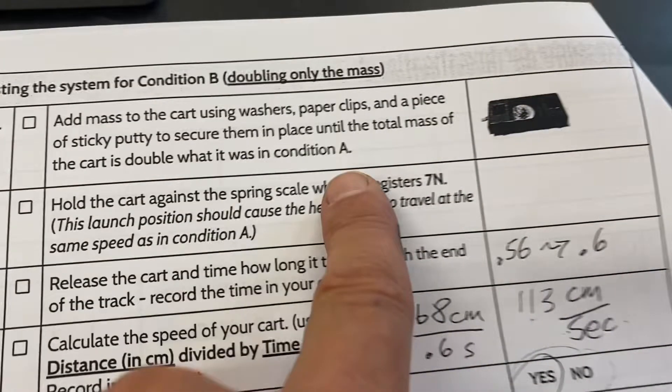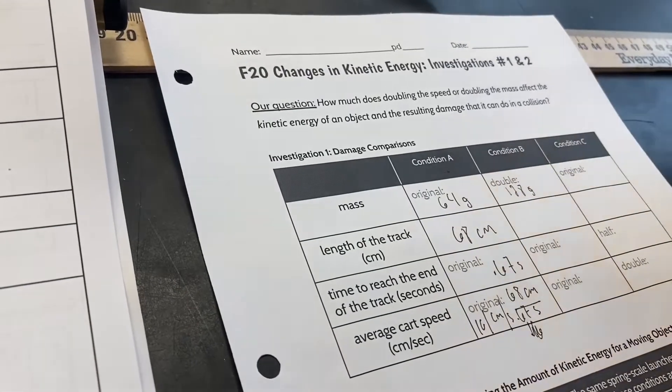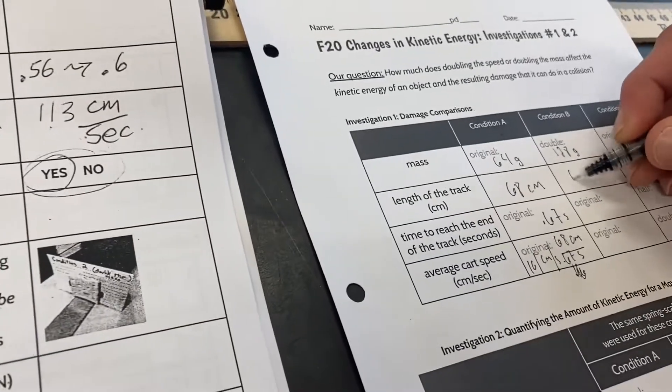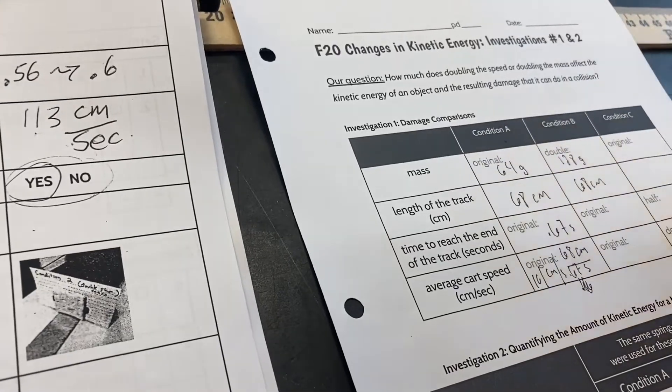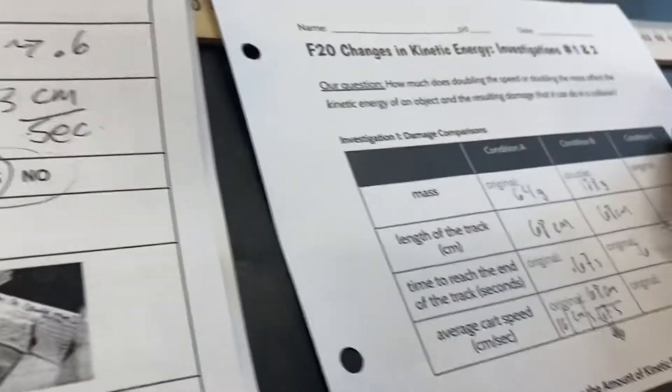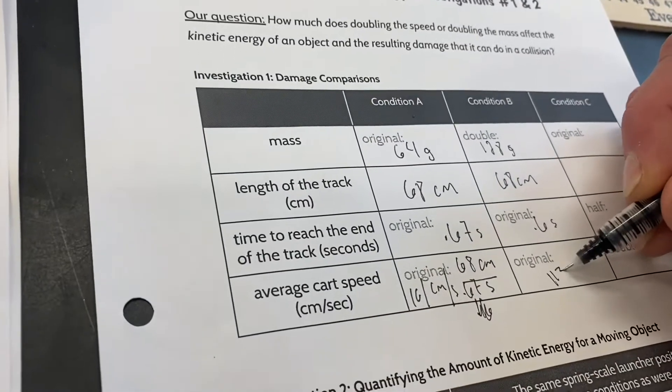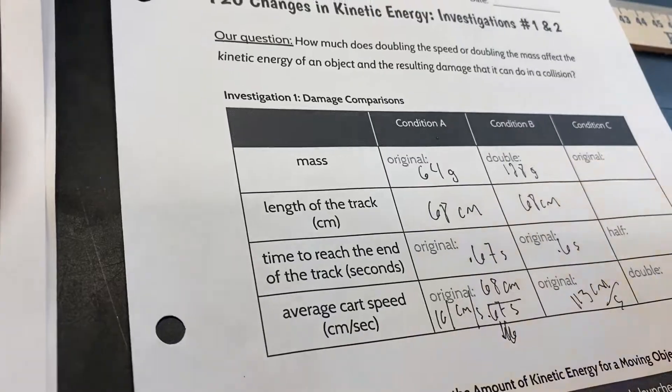Add these data to page F20. So we're going to use our data. You can write our data down or use your own if you have some. The cart was 128 grams. The distance of the track was the same, 68 centimeters. Our time we're using is 0.6 seconds. Again, you can use your data or use ours as you see fit. Then we're going to put our speed down, which is distance divided by time. We ended up with 113 centimeters per second.